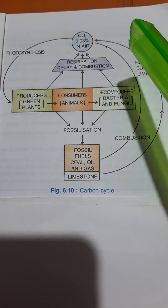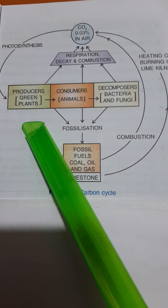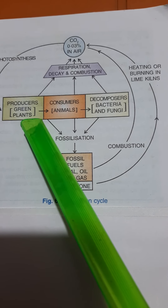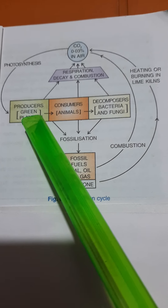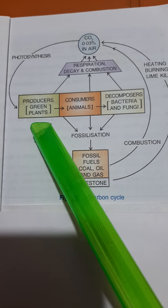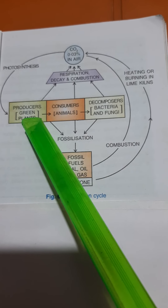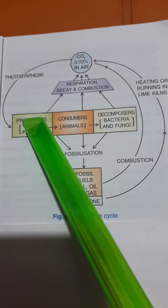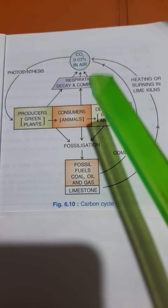Let us look at the different steps in the carbon cycle. The first one is photosynthesis. In photosynthesis, the green plants, or the producers, take carbon dioxide from the air and they photosynthesize — they make their food: carbohydrates, sugar, starch. They make this food, and this food is circulated through the food chain.